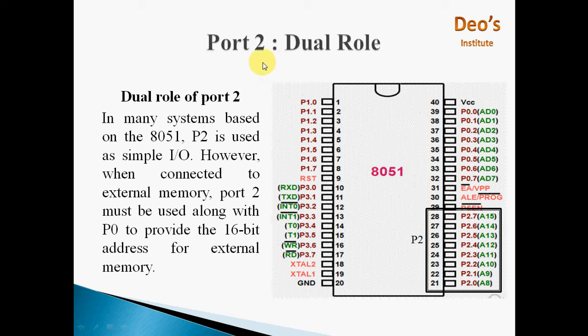Port 2 is able to perform dual role. When 8051 microcontroller is connected to external memory, P2 is used for upper 8 bits of the 16-bit address, so at that time it cannot be used for IO port. Here we can see port 0 stores the lower 8-bit of the address that is A0 to A7 and port 2 pins stores the higher bit of address that is A8 to A15.